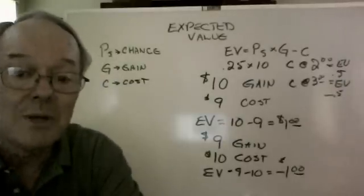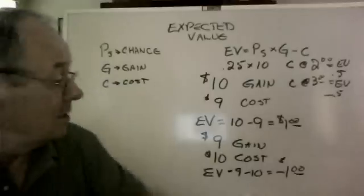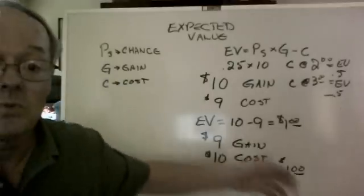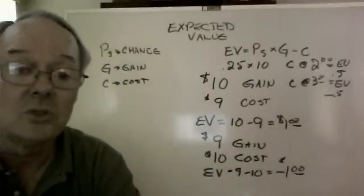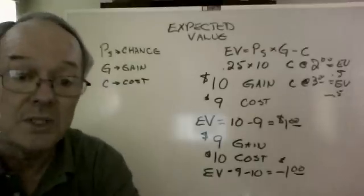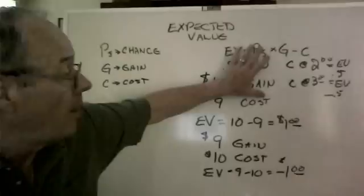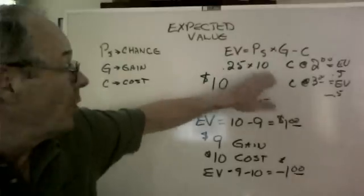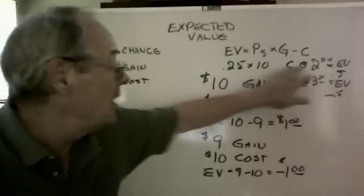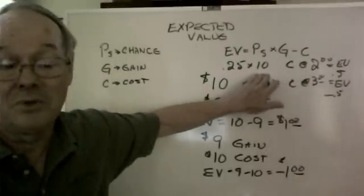But for now, what I'd like you to remember is that EV can be calculated even in the simplest cases where we have no uncertainty and no probability. It's always 100%. And in other circumstances where we have probability but still no uncertainty. We know exactly how much it's going to cost and exactly how much we're going to get for a gain.